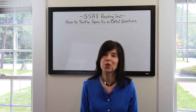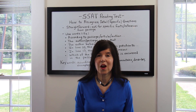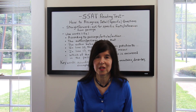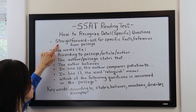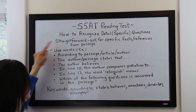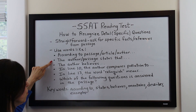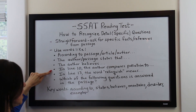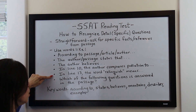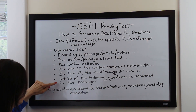Let's take a look at what they look like. Here are some tips on how to recognize detail or specific questions. Detail or specific questions are straightforward — they ask for specific facts or references from the passage. They use words like 'according to the passage,' 'according to the article,' 'according to the author,' 'the author or passage states that,' 'the author believes,' or references like 'in line 10, the author compares pollution to,' or 'in line 13, the word relinquish means,' or 'which of the following questions is answered in the passage.'